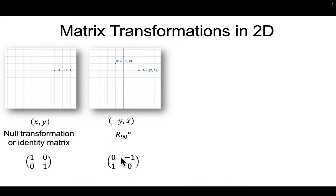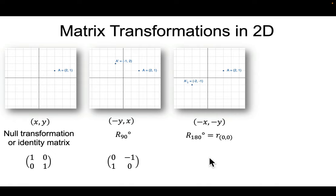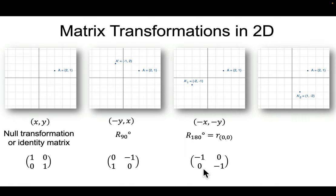For the 90-degree rotation, there's our matrix [0, -1; 1, 0]. For a rotation of 180 degrees — or equivalently a reflection through the origin — (2, 1) becomes (-2, -1), so (x, y) becomes (-x, -y). Setting up our multiplication, a must be -1 and d must be -1. Interestingly, in three dimensions, a 180-degree rotation and a reflection through the origin are not necessarily the same thing, but in 2D they are.